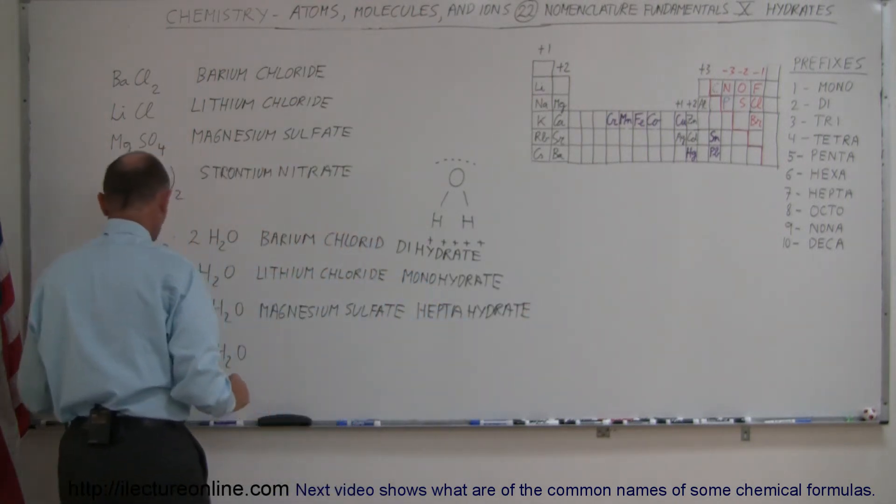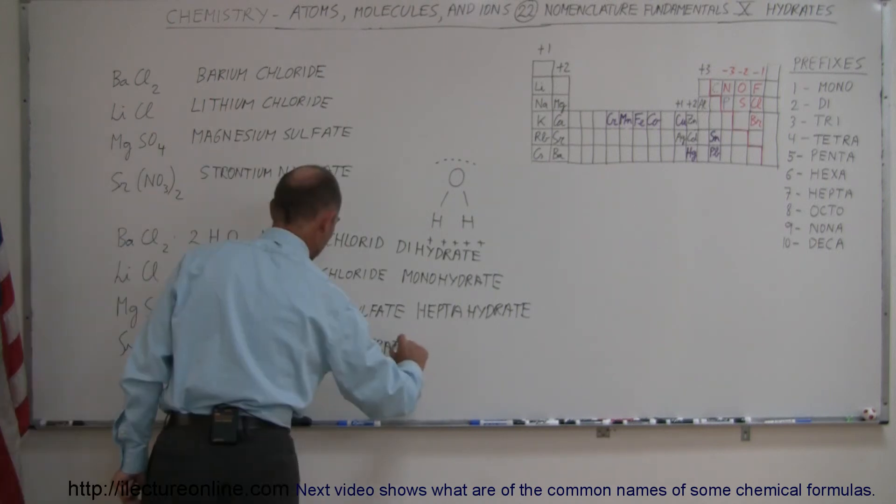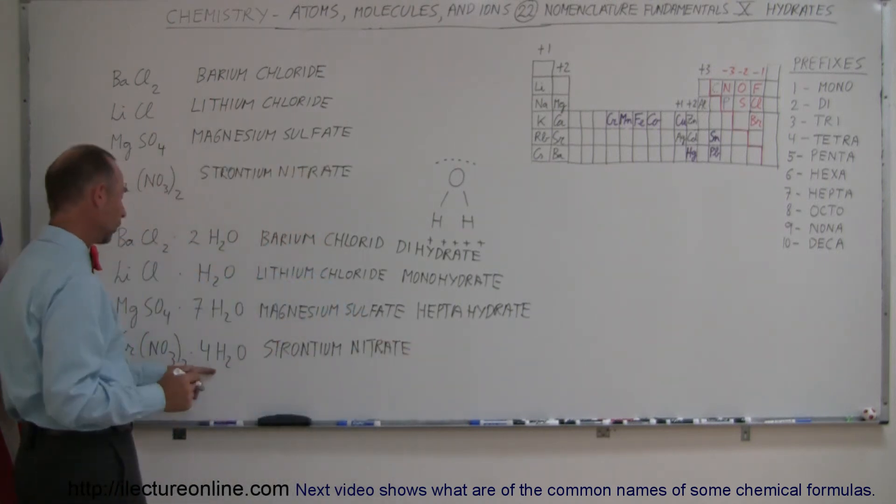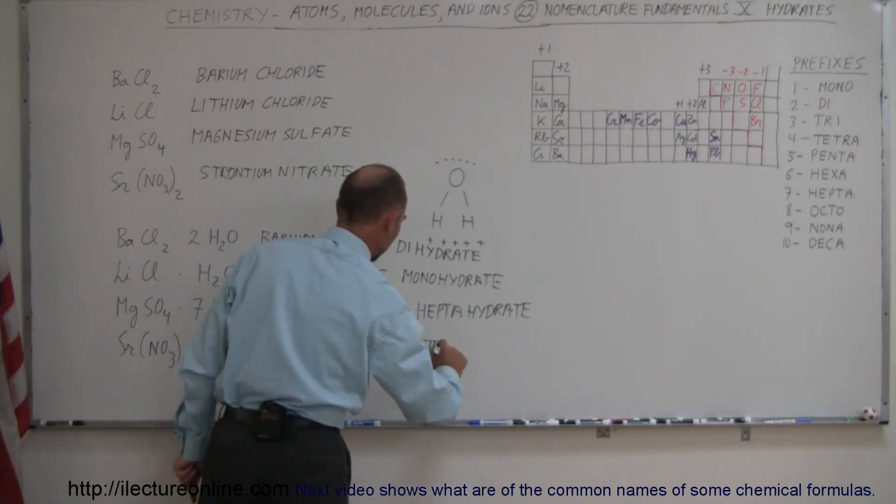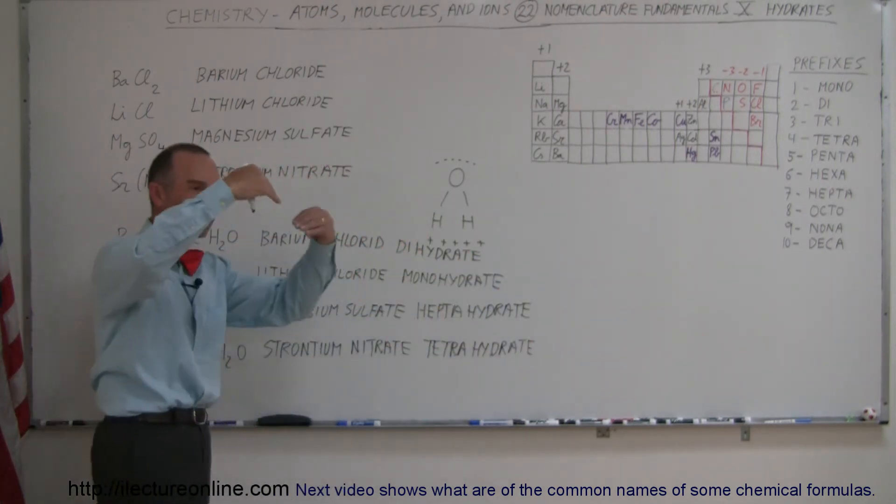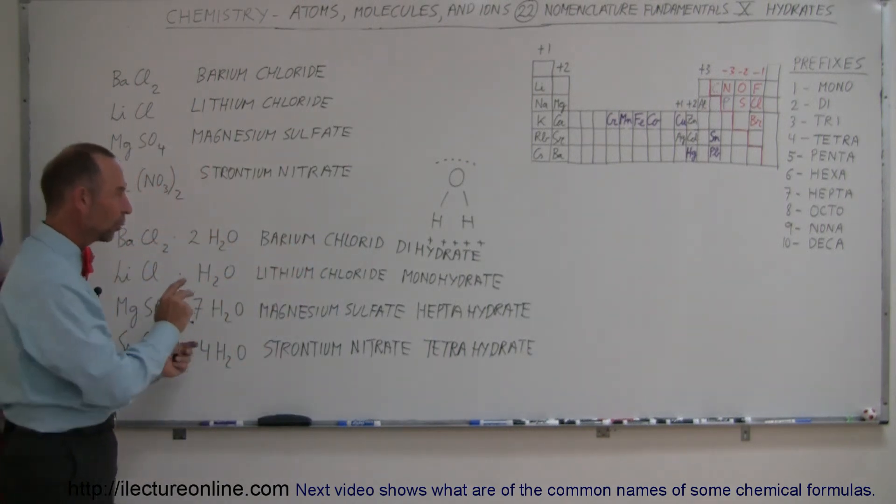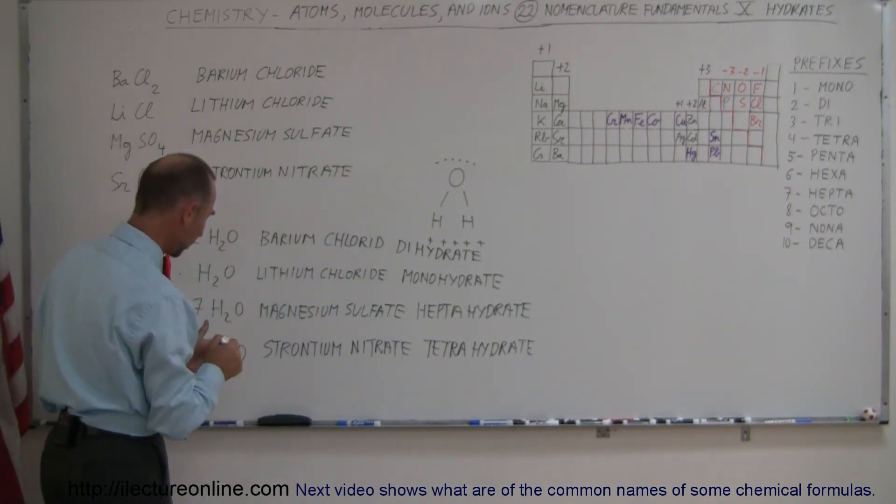And finally, we have the strontium nitrate. And they will meet up or join up with four hydrogen or four water molecules. And so we use tetrahydrate. And those kind of join on in to the outside of the molecule, wherever the polar end of the water molecule can do that.